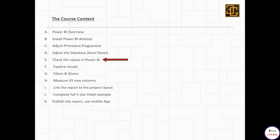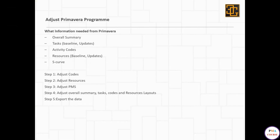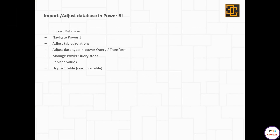In this session, we are going to talk about how to adjust values in Power BI. We will start by importing the database, then navigate Power BI and see its features, adjust the relationships between the tables, and check the Power Query Editor. I will take you quickly through the main features of Power Query Editor, which is very important in Power BI.